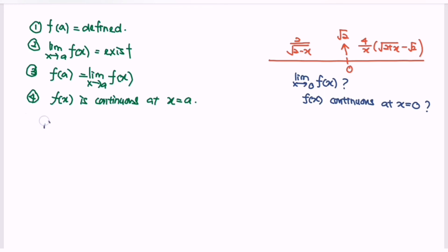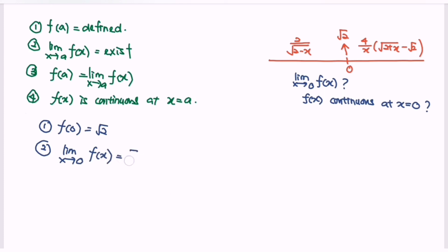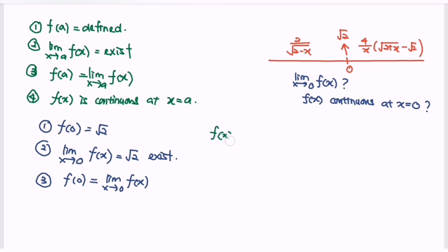Number 1: f(0) — kindly refer to the number line — the answer is square root of 2. Step 2: the limit when x approaches 0 for f(x) gives y approaching square root of 2, and it exists. Step 3: is f(0) equal to the limit when x approaches 0 for f(x)? The answer is yes, it is equal. So as a conclusion, f(x) is continuous at x equals 0.